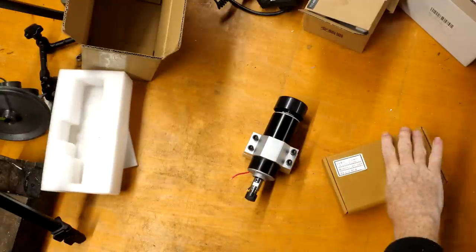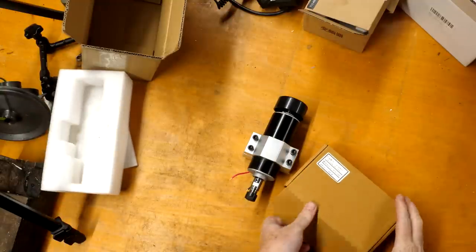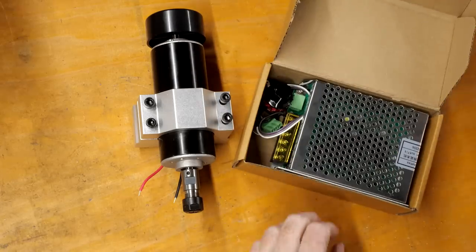The box contains the spindle itself, a mounting bracket, and a separate unit which is the power supply and controller.